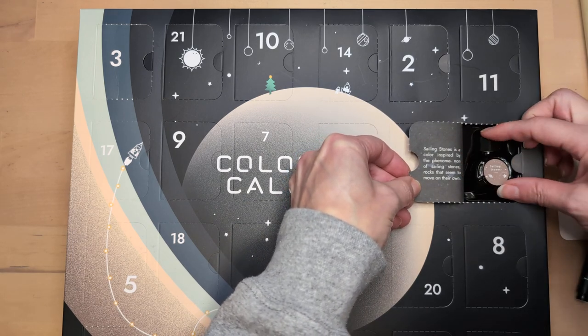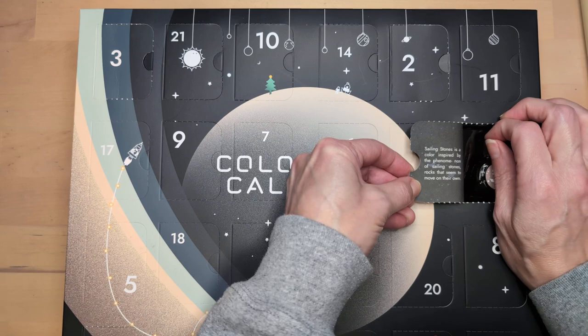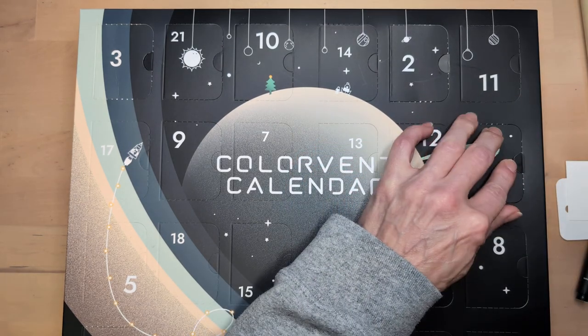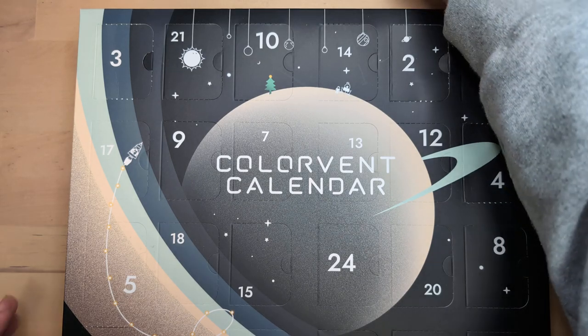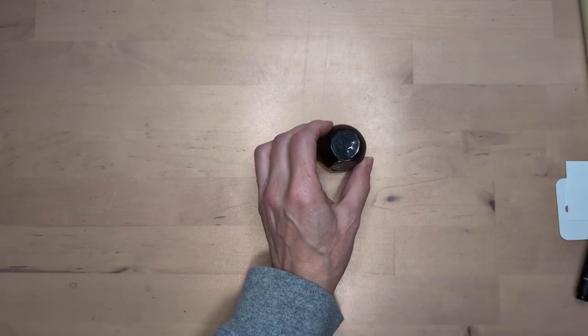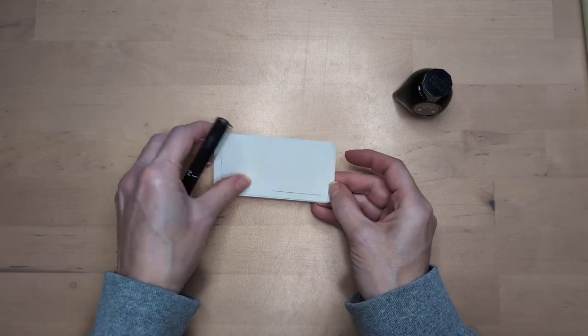Sailing stones is a color inspired by the phenomenon of sailing stones, rocks that seem to move on their own. That's common in deserts. Doesn't it happen because the ground sort of acts like ball bearings?